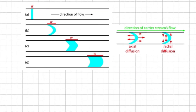The second contributor to sample dispersion is diffusion, due to the concentration gradient between the sample and the carrier stream. Diffusion occurs in two ways: axial diffusion, which is parallel to the flow, and radial diffusion, which is perpendicular to the direction in which the carrier stream is moving.